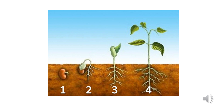Here is another picture of the life cycle of a plant. Start with number one, and then go to number two, three, and four. In this picture, you can see the seed first, and then you can see the plant growing and getting bigger.